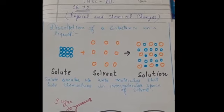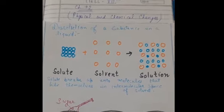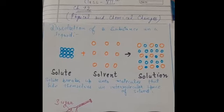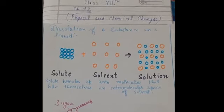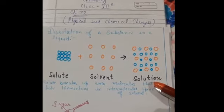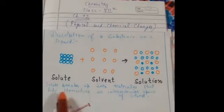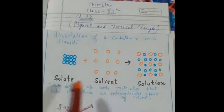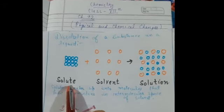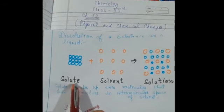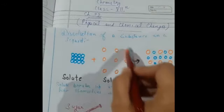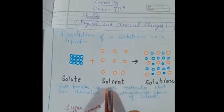Now let us discuss some changes. First is dissolution of a substance in a liquid. We know that a solution is made up of two parts, solute and solvent. The substance which is present in less amount is called solute, and the substance which is present in more amount is known as solvent.